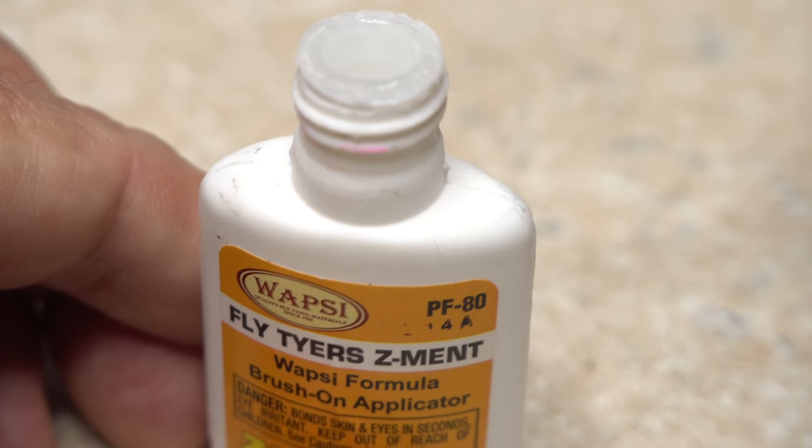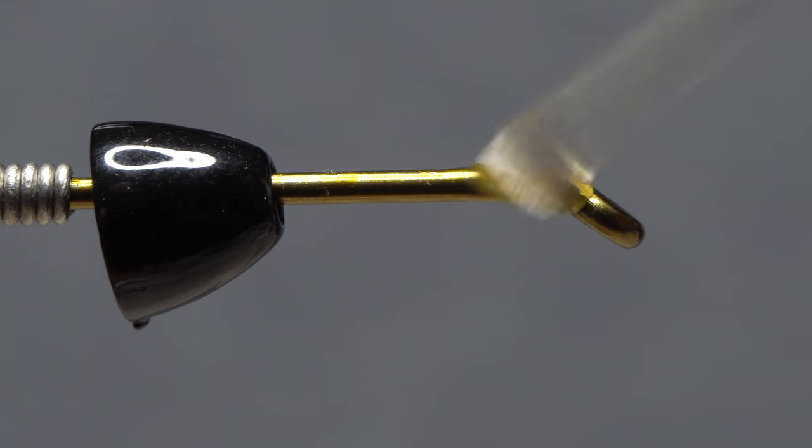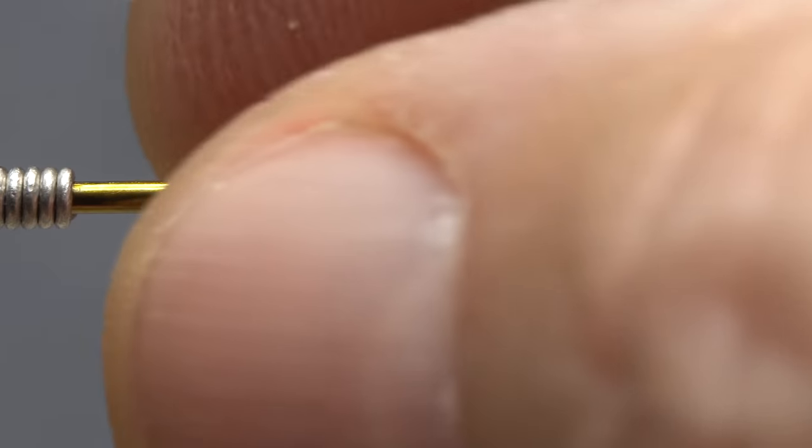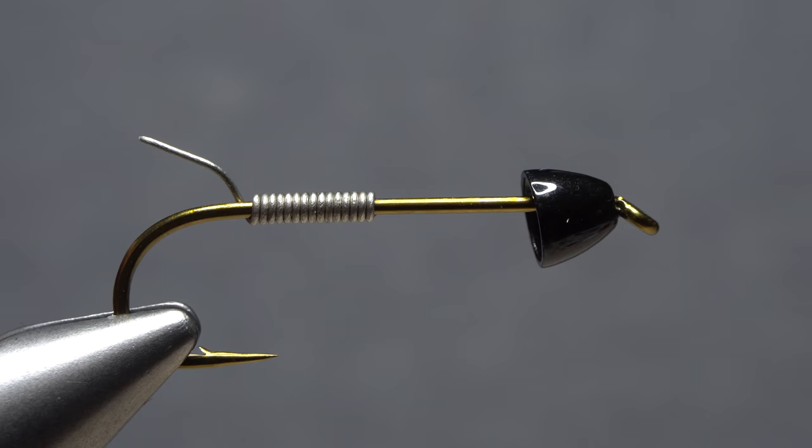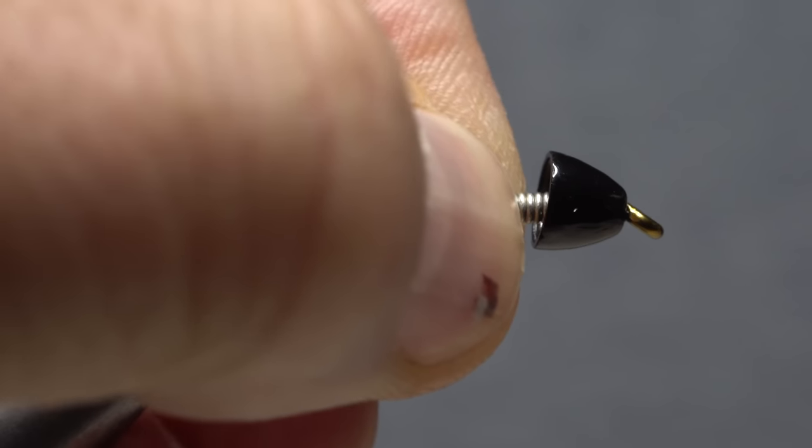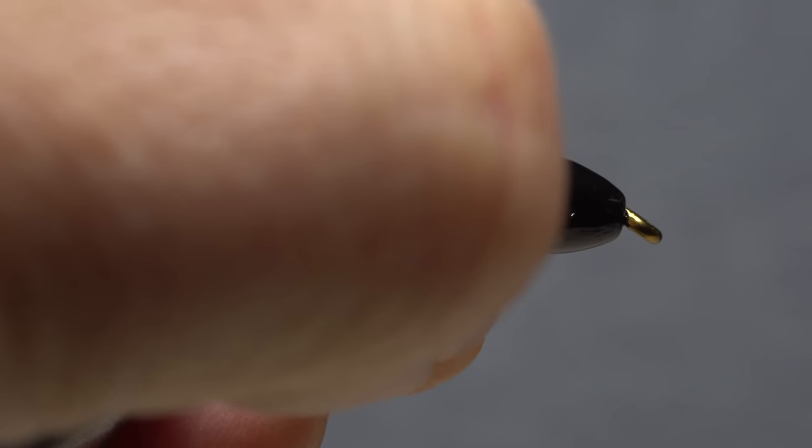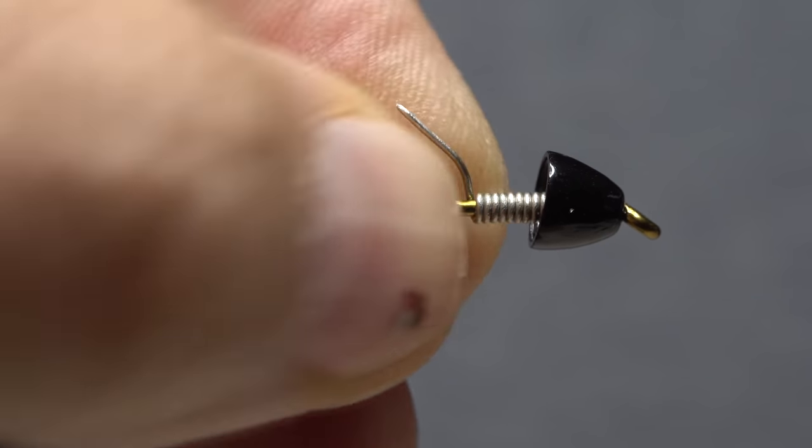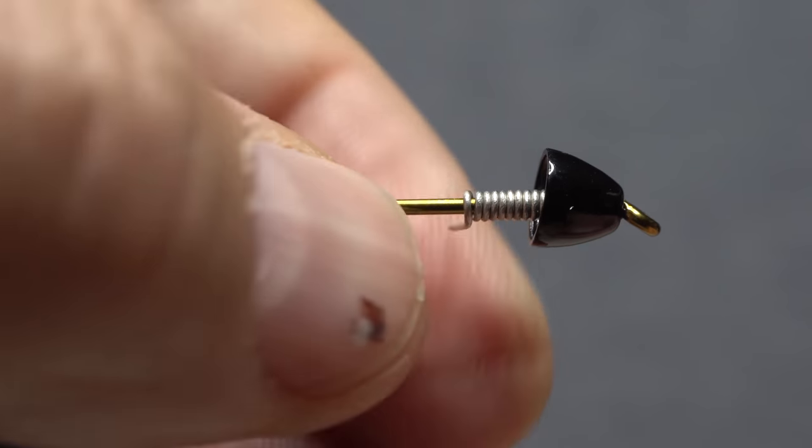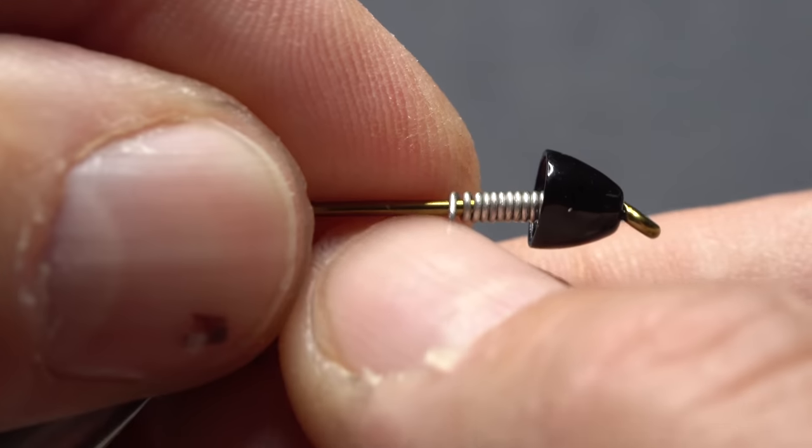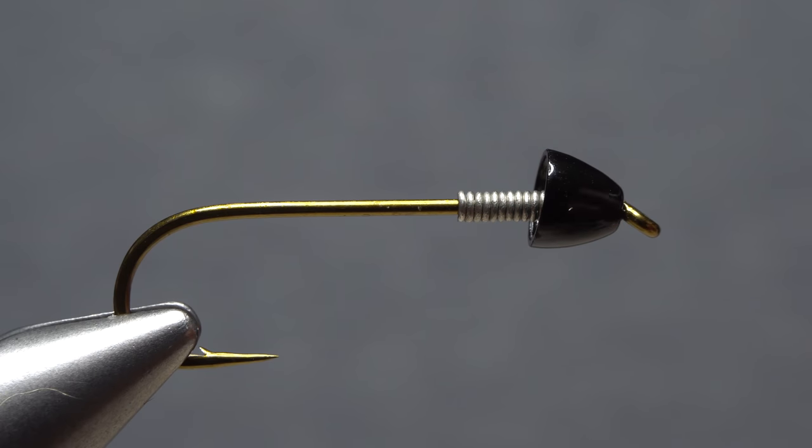Reach for your superglue or here Fly Tyer Z-Ment and apply a drop to the hook shank behind the eye. Push the conehead forward against the eye. Push the wire wraps forward into the back of the cone and hold them there for a few seconds while the adhesive sets. You can then tuck in the tail end of the wire without the wraps simply spinning around the hook shank. The cone should now be locked into position.